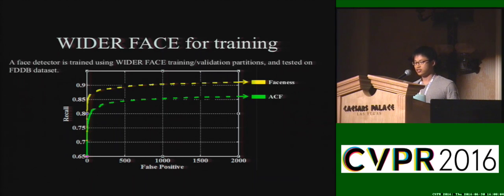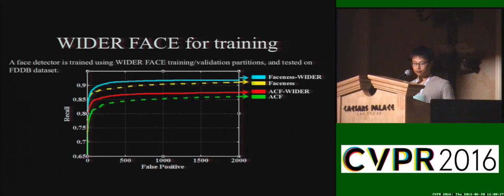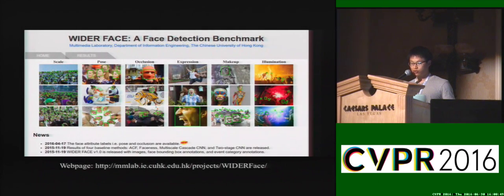As demonstrated, WiderFace can serve as a challenging evaluation set. In this experiment, we also show that it can serve as an effective training set to improve face detector performance. We retrain ACF and Faceness on WiderFace. The retrained ACF and Faceness detectors outperform the baseline methods by a considerable margin, demonstrating the effectiveness of WiderFace as a training source. We have shared all annotations and images on our website — please feel free to download it and submit new results to our leaderboard. Thank you.